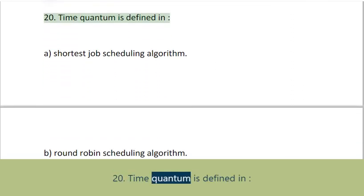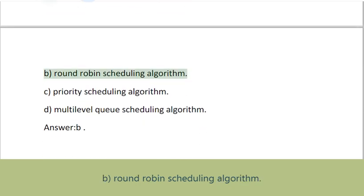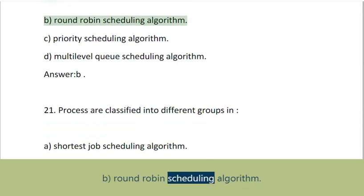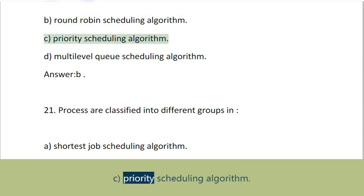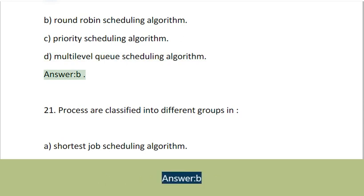Question 20: Time quantum is defined in: A. Shortest job scheduling algorithm, B. Round robin scheduling algorithm, C. Priority scheduling algorithm, D. Multi-level queue scheduling algorithm. Answer: B.